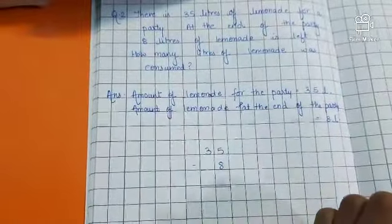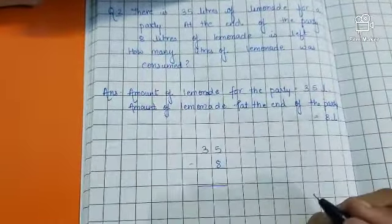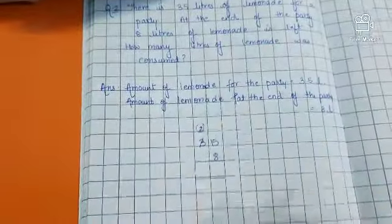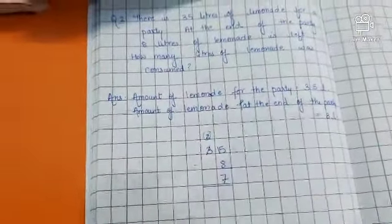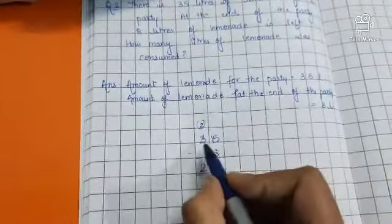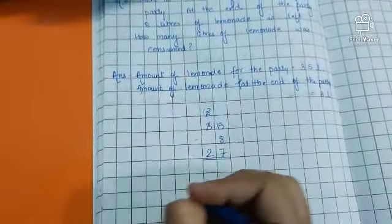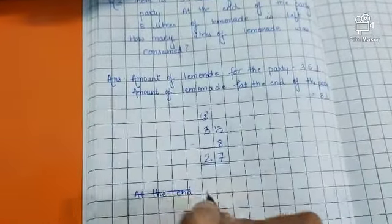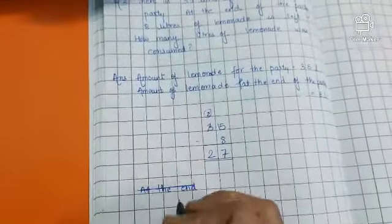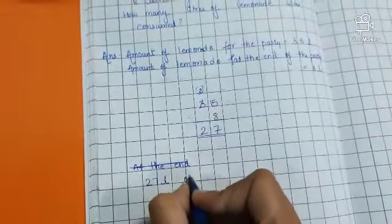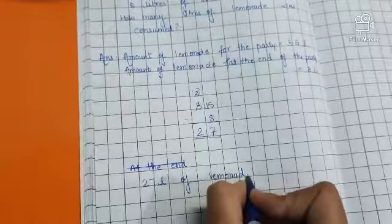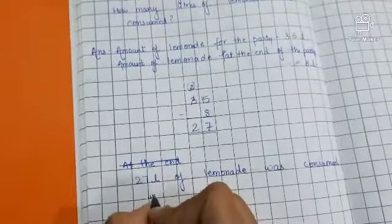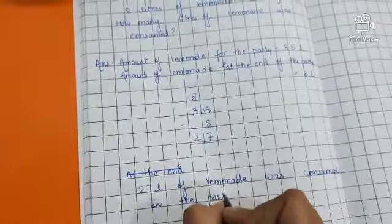So 5 minus 8, as we cannot subtract 8 from 5, we'll take one borrow from this 3 which makes this 5 become 15 and this 3 will become 2. Now 15 minus 8 is 7 and 2 as it is. So 35 minus 8 is equal to 27. Write down, 27 liters of lemonade was consumed in the party.